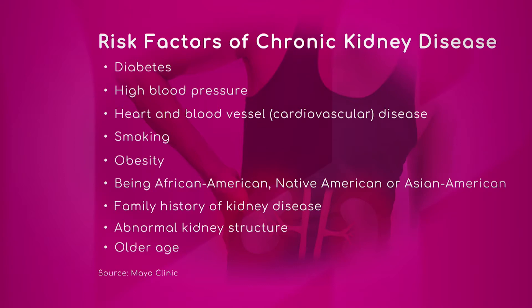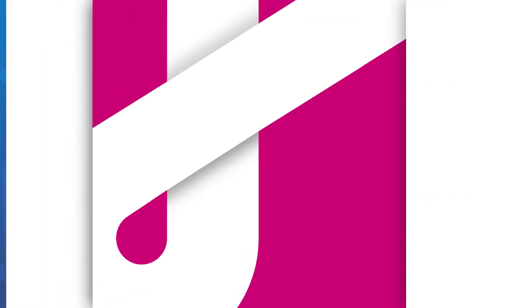Family history is one of the risk factors, especially with genetic disorders such as adult polycystic kidney disease, and age as I mentioned before. Interestingly, smoking and obesity can contribute to so many different problems. Some patients have three or four risk factors at the same time, which further increases the risk of developing kidney disease.